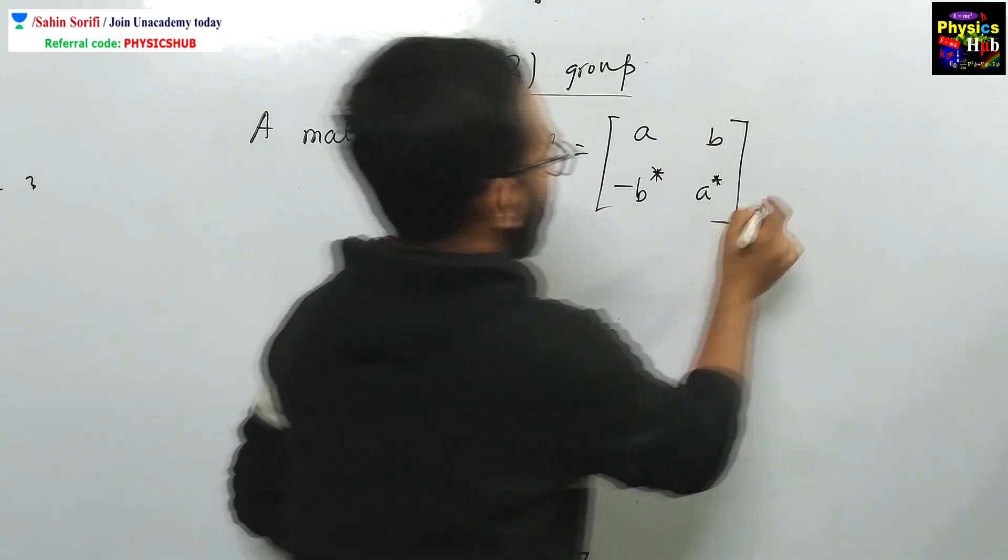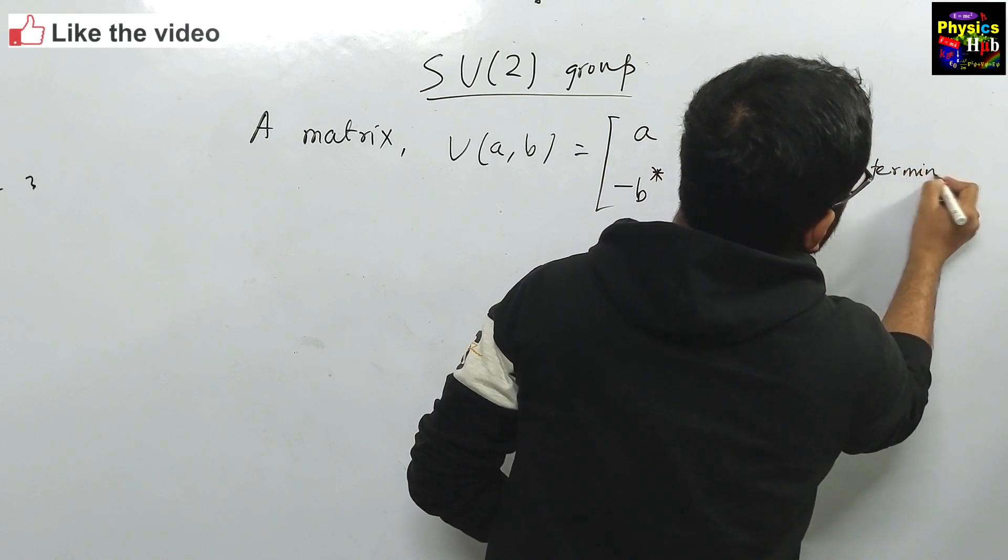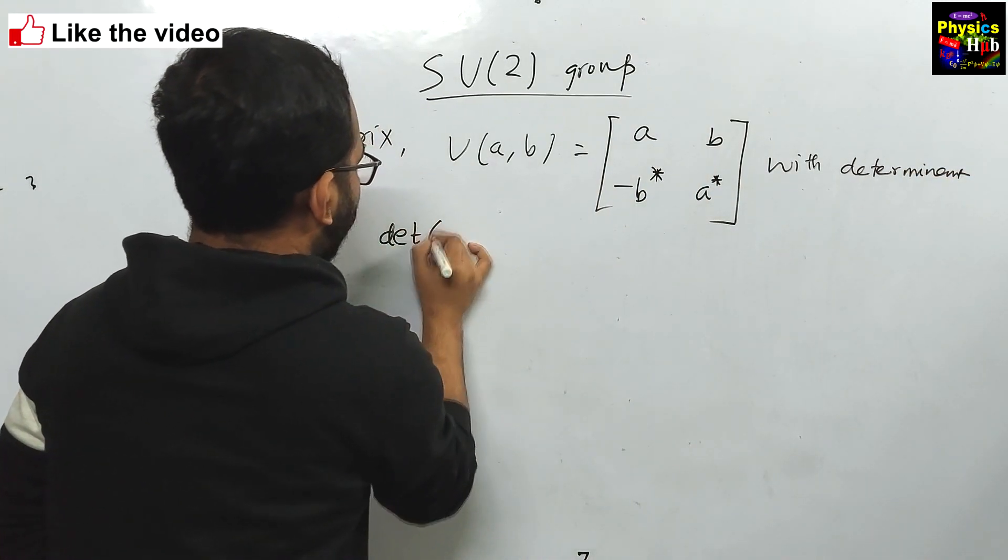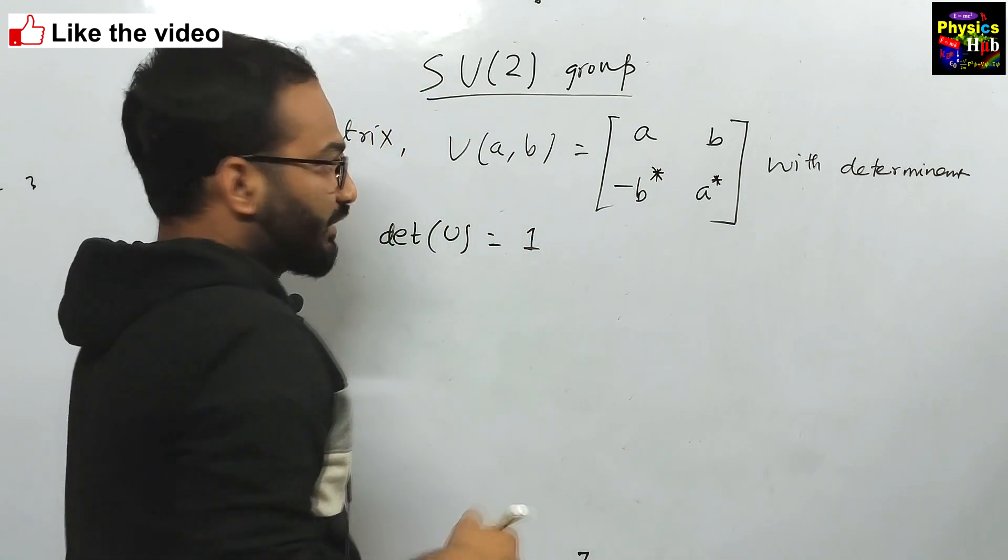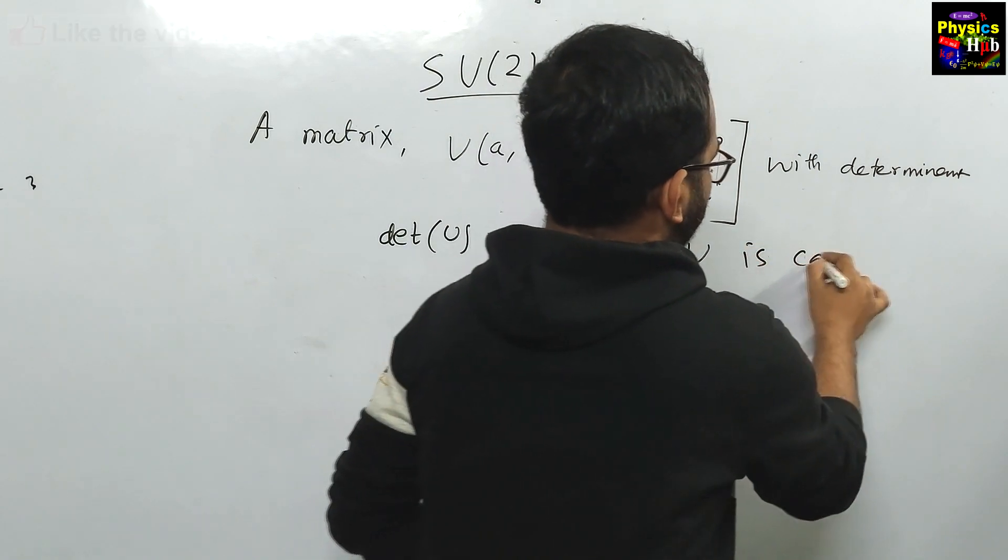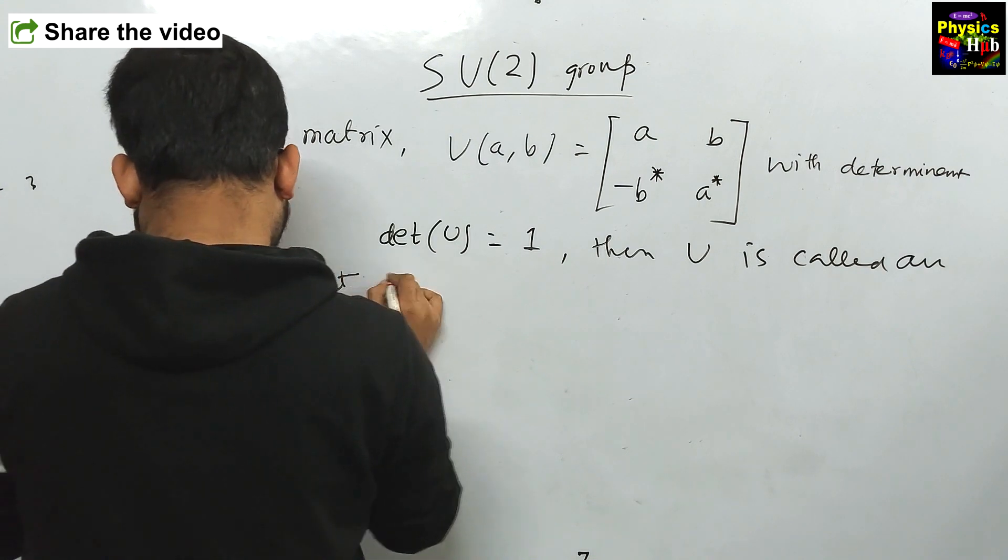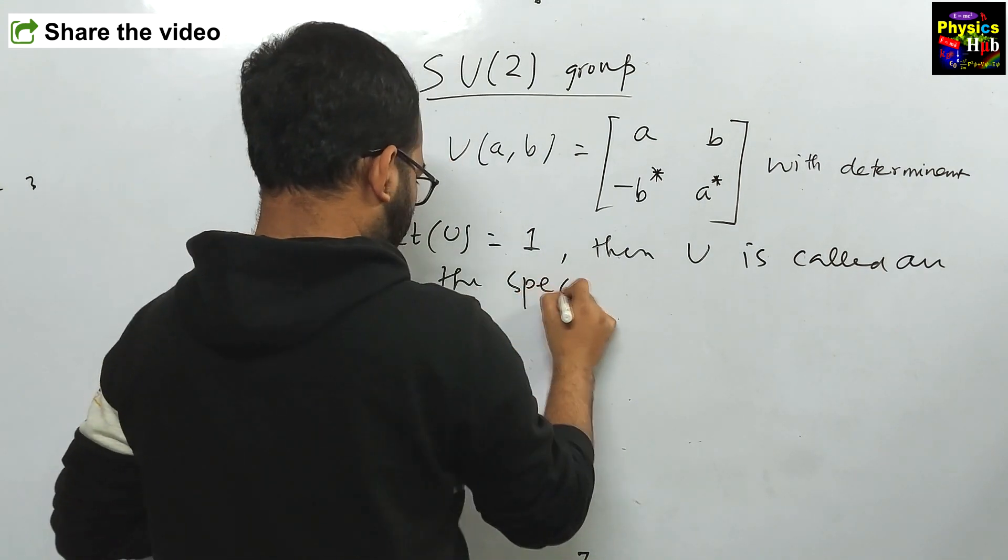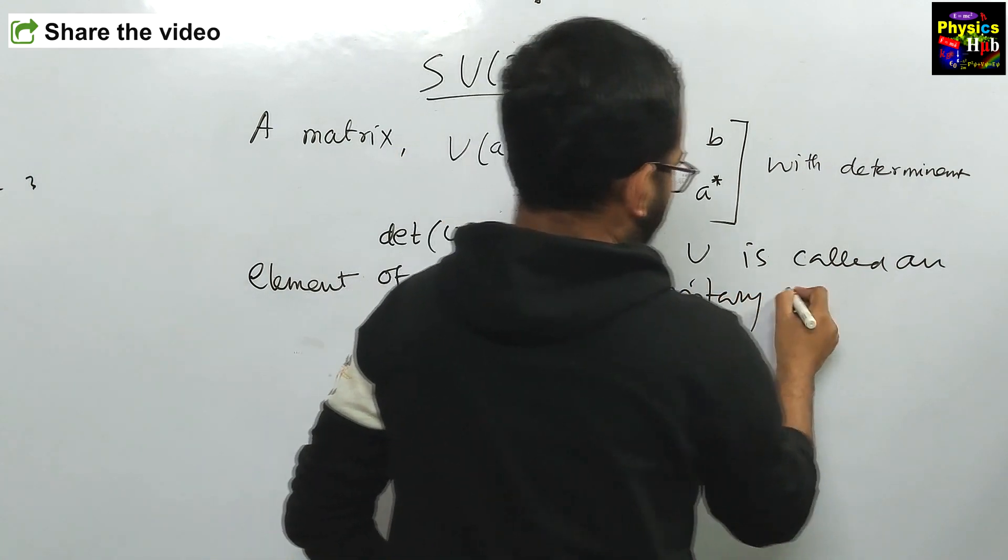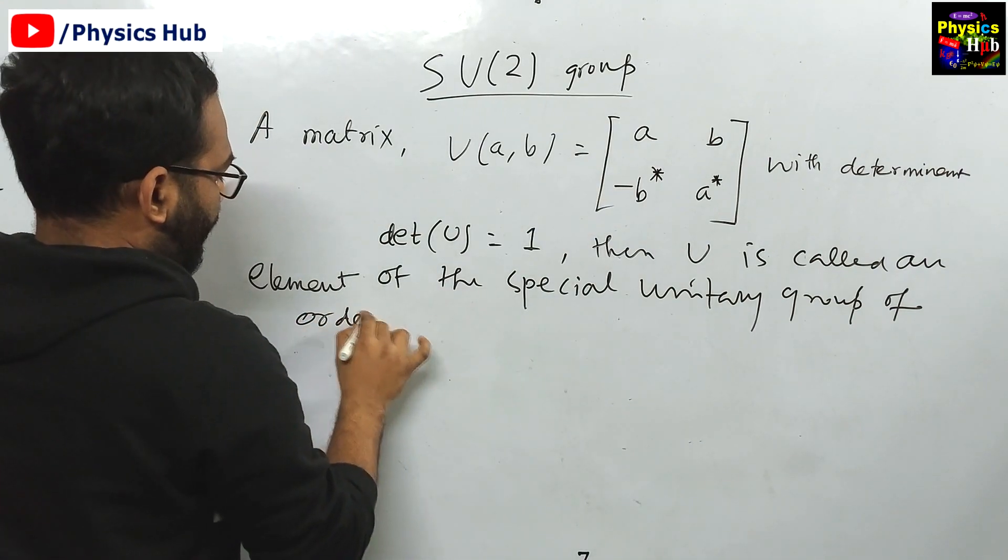If you have the matrix U with determinant, determinant of U equals to unity.